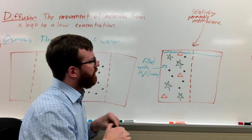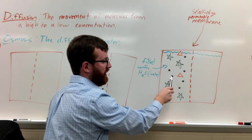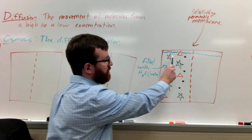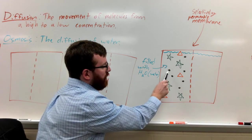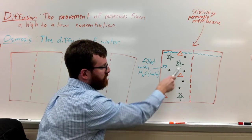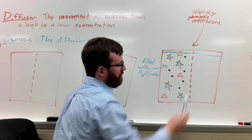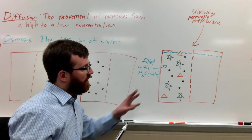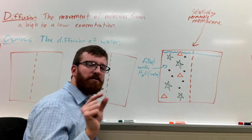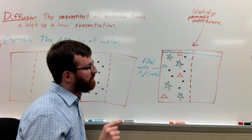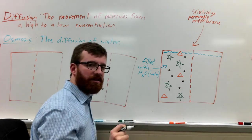Here we have many different molecules — these shapes represent molecules. We have stars, triangles, and little black dots, and they're all submerged in water. The tiny little black dots are smaller, and the stars and the triangles are a little bigger. How membranes usually select molecules that can go through them is based on size. Even little plastic bags are actually selectively permeable, and they have little tiny pores that really small things can go through.